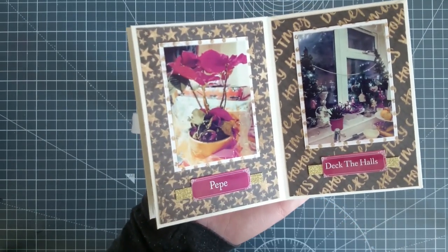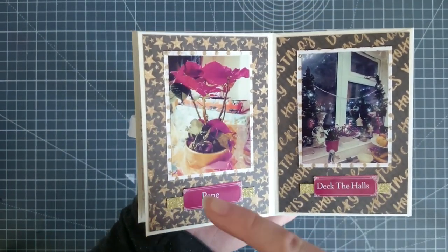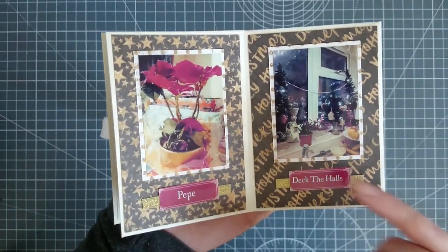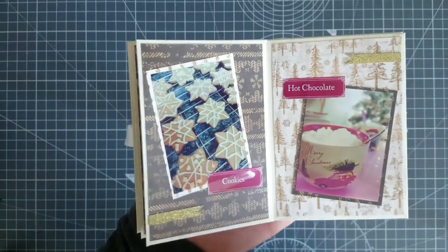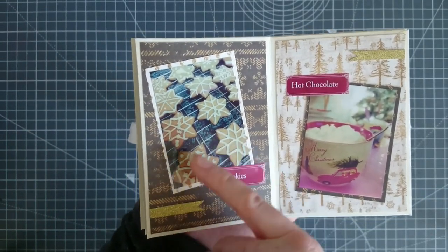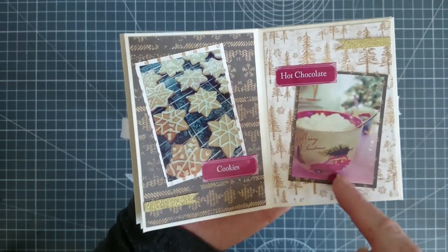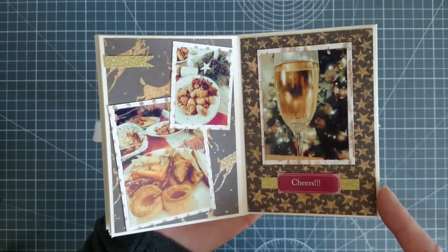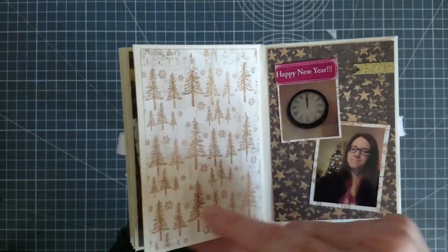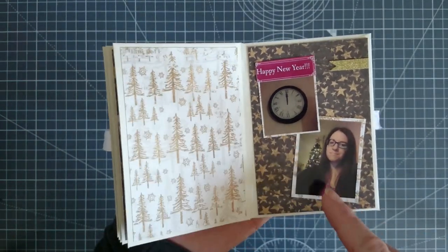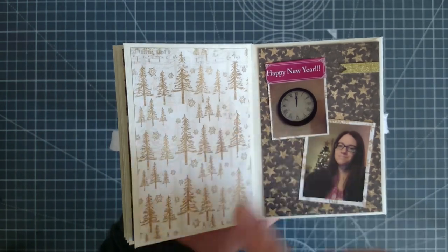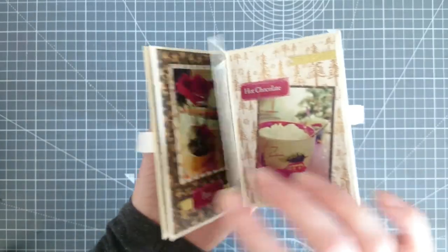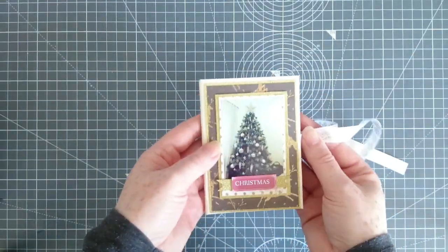Here we have Pepe the poinsettia - he started to drop his leaves because my husband brought him back in the cold. Here's my kitchen sink. Christmas Eve, we made snowflake cookies and hot chocolate. I got my cup in my Christmas Eve box. Then Christmas Day with our celebrations and champagne. Here's a blank page for journaling, a selfie in front of my tree, and a picture at midnight for Happy New Year. That was my Christmas back in 2017.